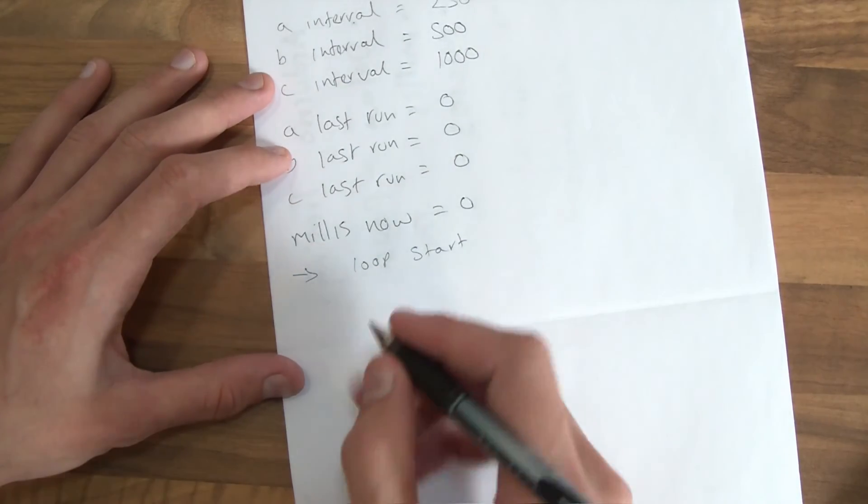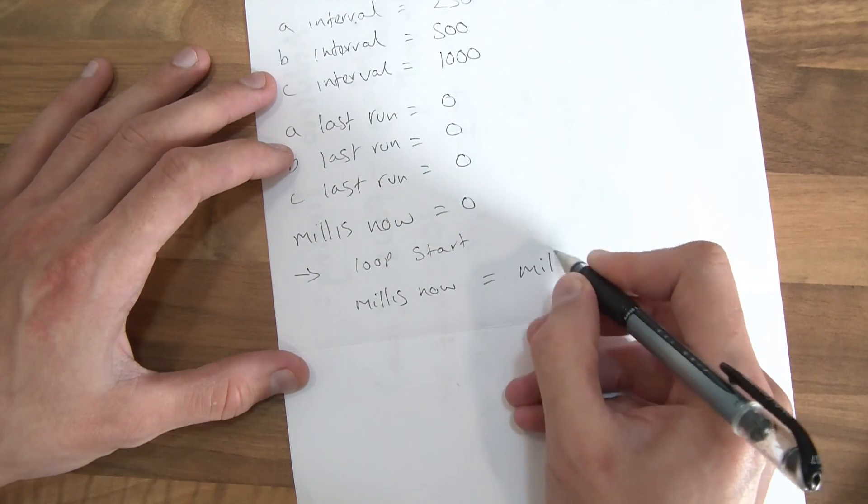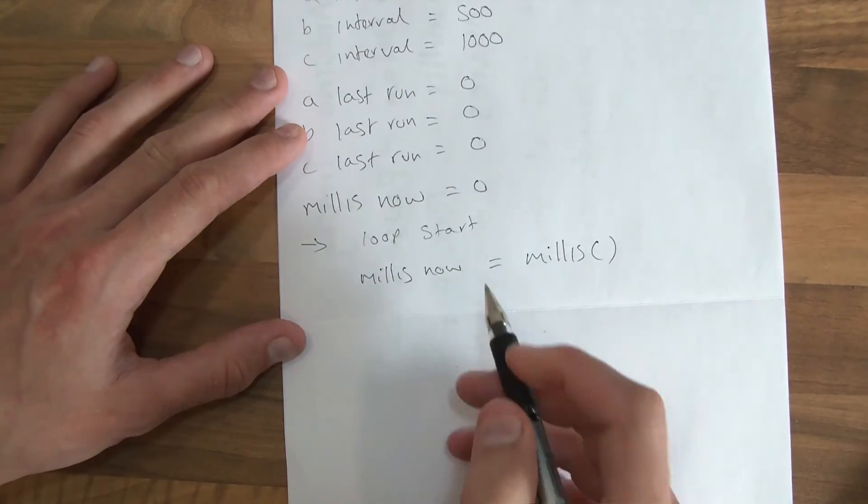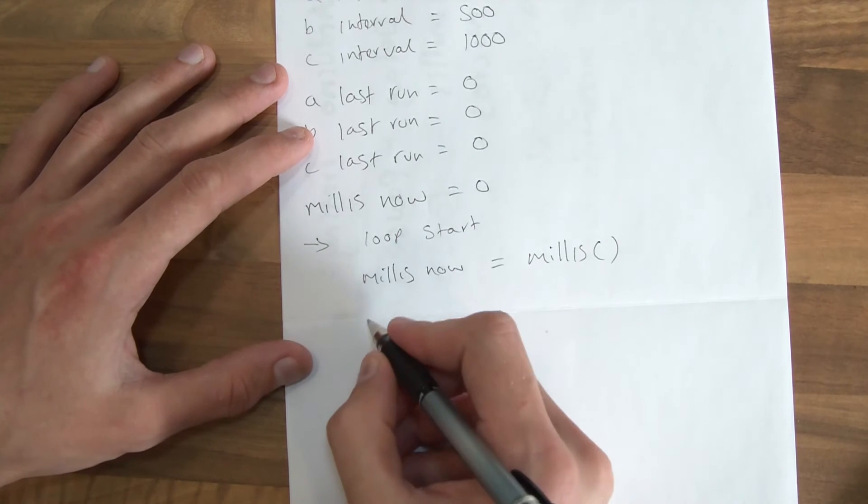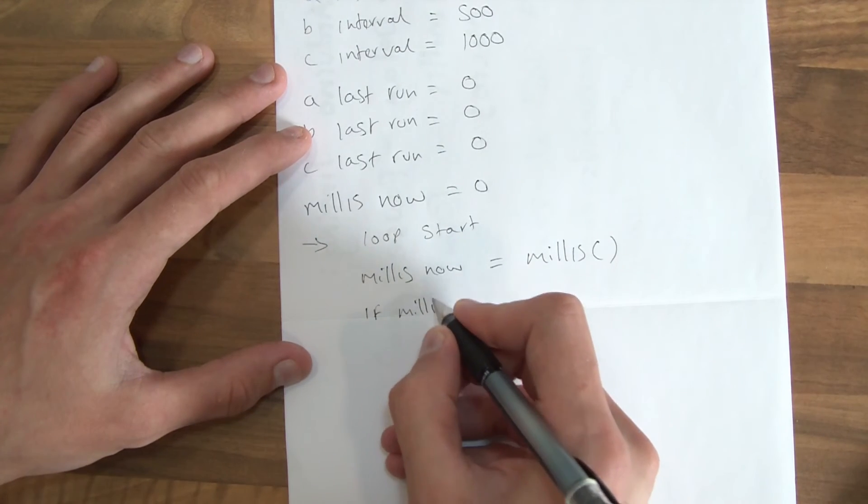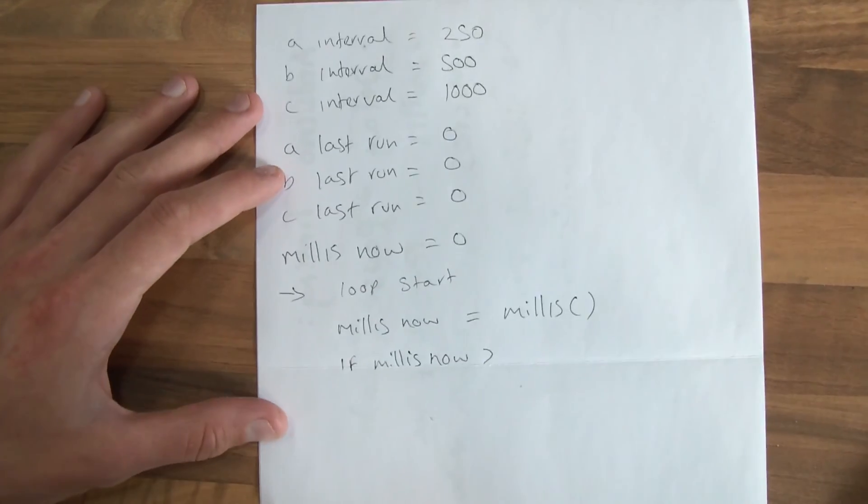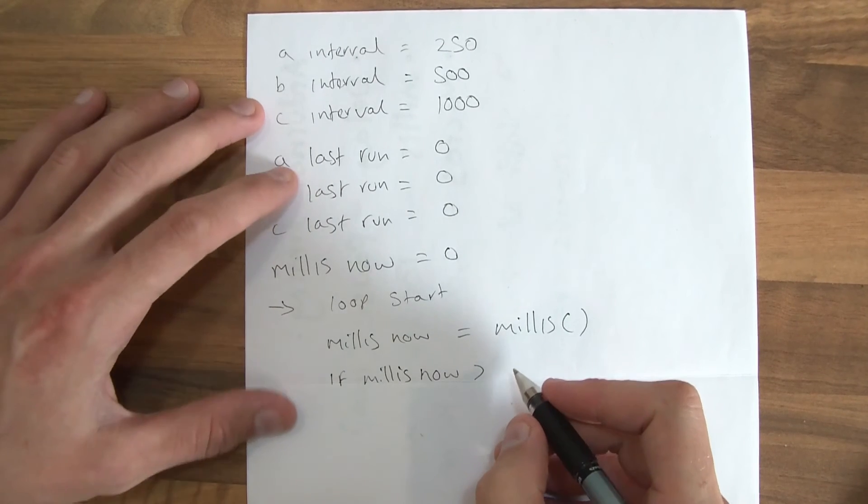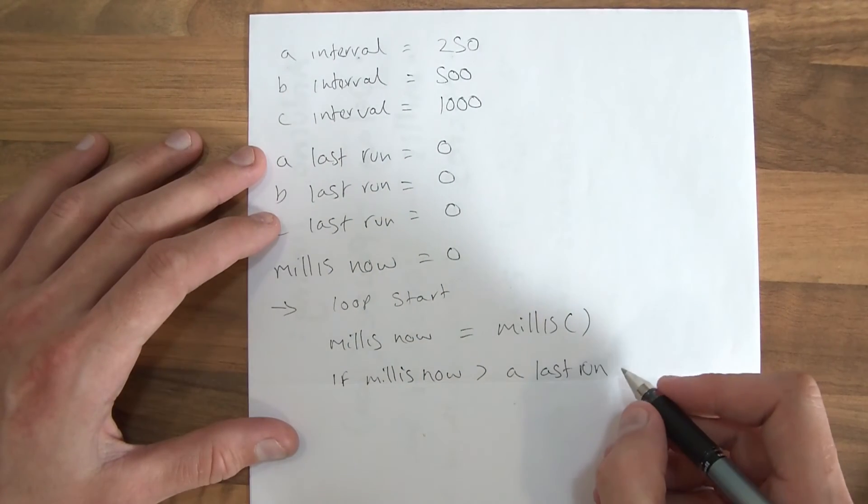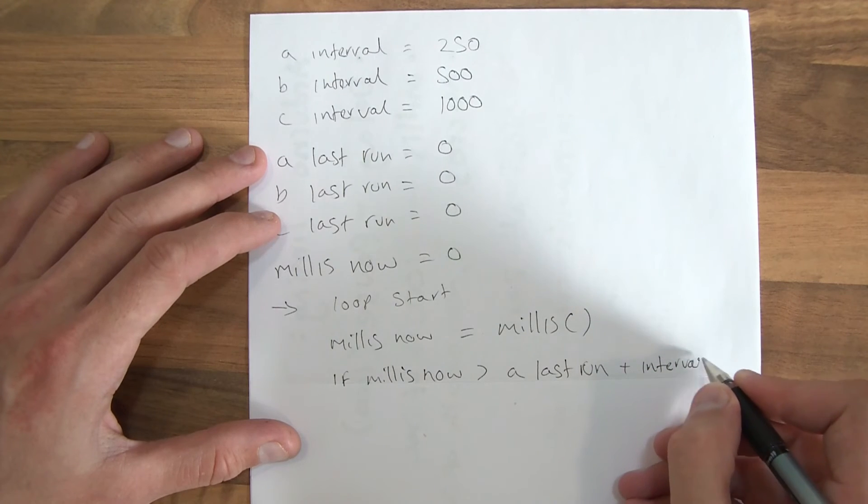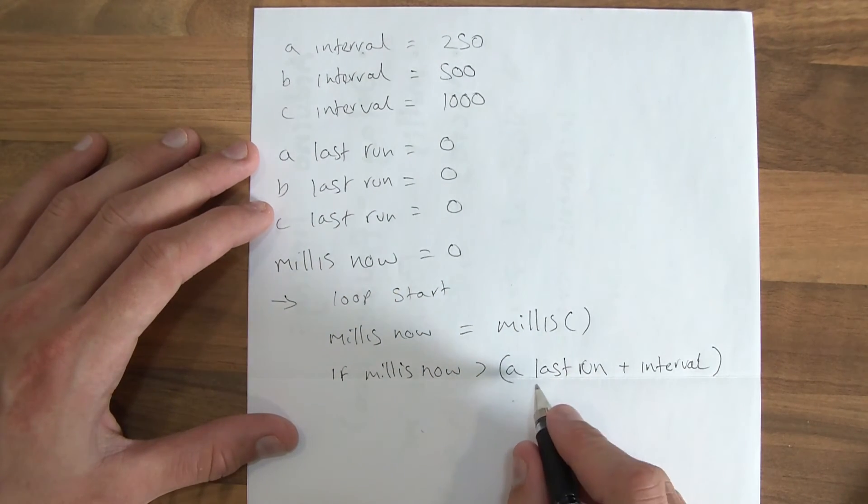So the first thing we want to know is what's the millis now? So millis now equals the millis function. So that gets the amount of milliseconds since the Arduino was turned on. So millis now equals that, whatever that is. And then what we need to do is, if millis now is greater than the time it was last run. So if millis now is greater than the last time run, which is there, a last run, plus the interval. So if millis now is greater than a last run plus interval in brackets to save any confusion.